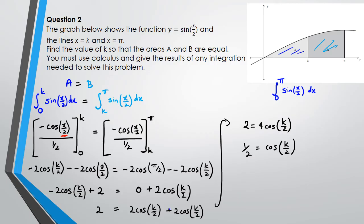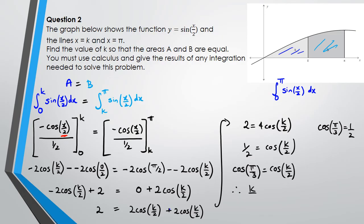This is where special triangles come in handy. Looking at your formula sheet, cos(π/3) equals one-half. So one-half equals cos(π/3) equals cos(k/2), which means k/2 equals π/3, and therefore k equals 2π/3. That is the answer for question 2. Let's have a look at the next question.